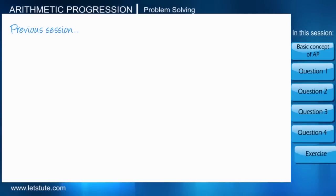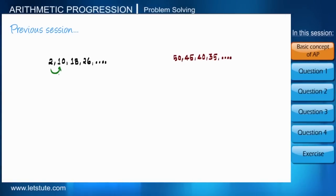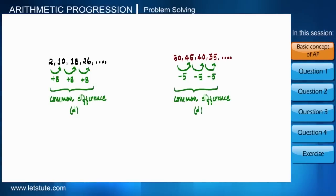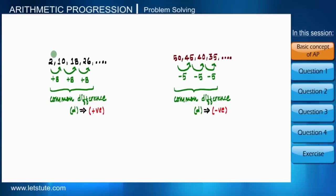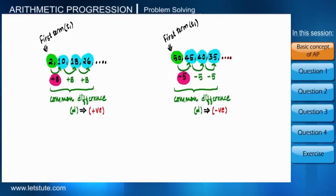In the previous session we learned the basic concept of arithmetic progression, where a sequence of numbers follows AP only if the difference between consecutive numbers is constant, which we call the common difference. This common difference may be positive or negative. There will always be a starting number, and when we keep adding the common difference we get the next number. So the first term and the common difference are the main pillars of any arithmetic progression.